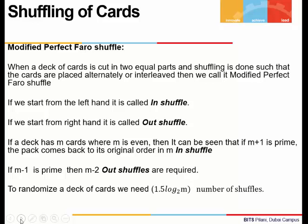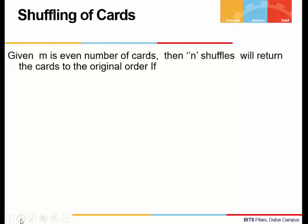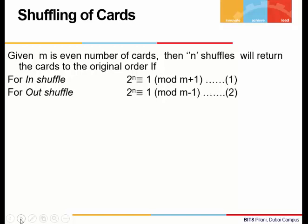In the game of cards, the player shuffles them to randomize. So how many shuffles are needed to randomize a pack of cards? If we have a pack with m even number of cards, we need n shuffles to bring the deck back to its original order. For in-shuffles, 2 to the power n must be congruent to 1 mod of m plus 1. For out-shuffles, 2 to the power n must be congruent to 1 mod of m minus 1.